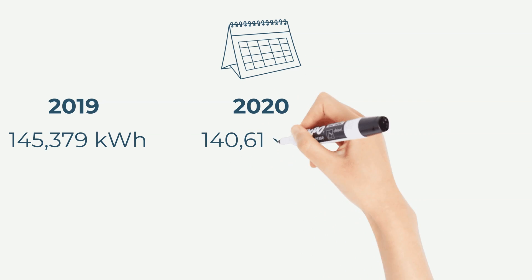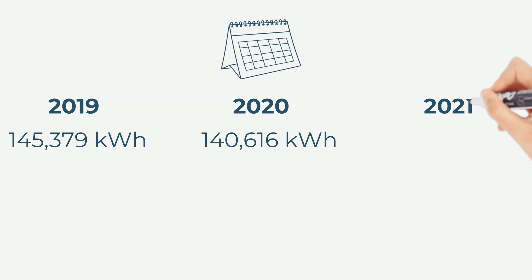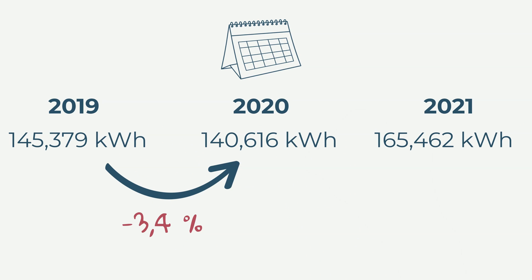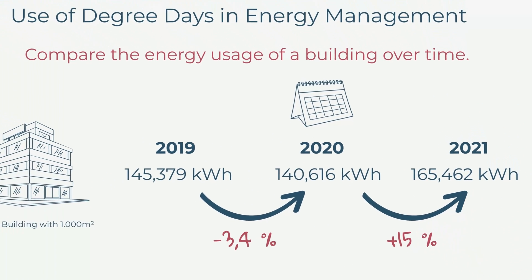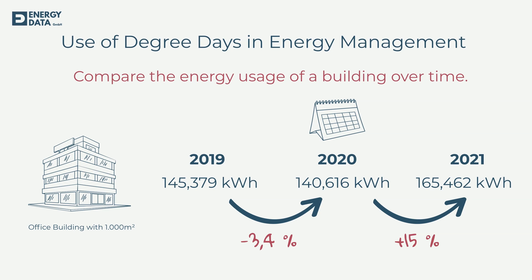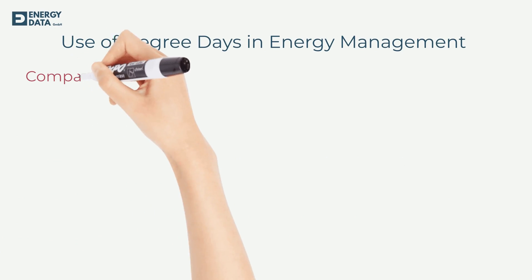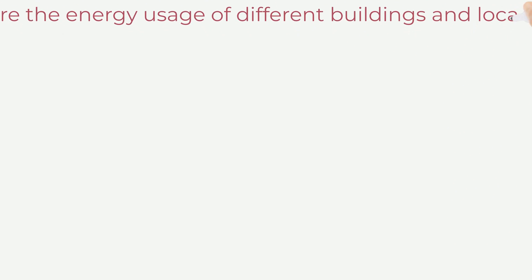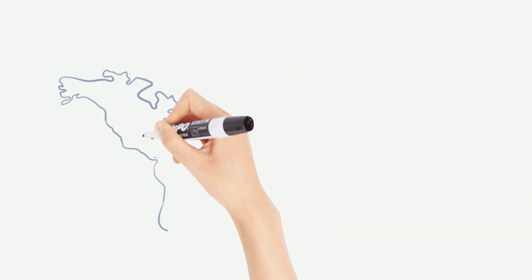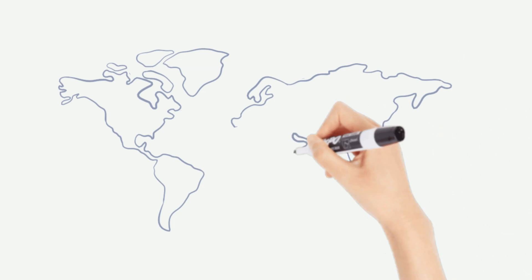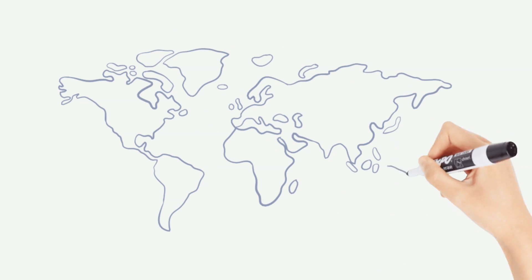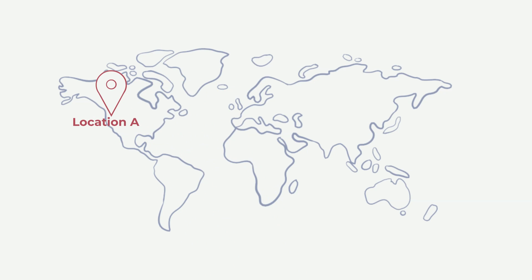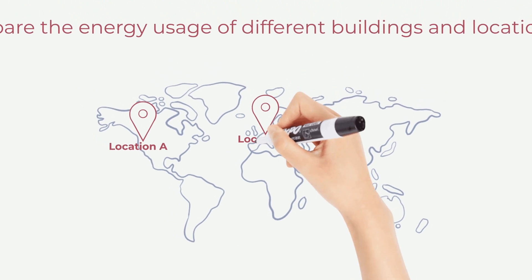Normally you have the energy consumption on an annual basis, monthly basis, or maybe even on a daily basis, and you want to track the energy performance. The second use case is that you want to compare different buildings in different locations — for example, a hotel portfolio with multiple locations where you want to compare the energy performance across different climate zones.